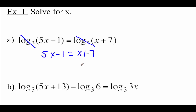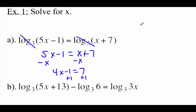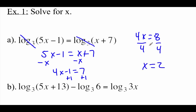Now we're just going to do some solving, which means get the x values on one side and the numbers on the other. So I'm going to subtract this x over to the left-hand side, so we've got 4x minus 1 equals 7. Add this 1 over to the right-hand side, so we've got 4x equals 8. Last step, divide by that 4, so we get x equals 2.